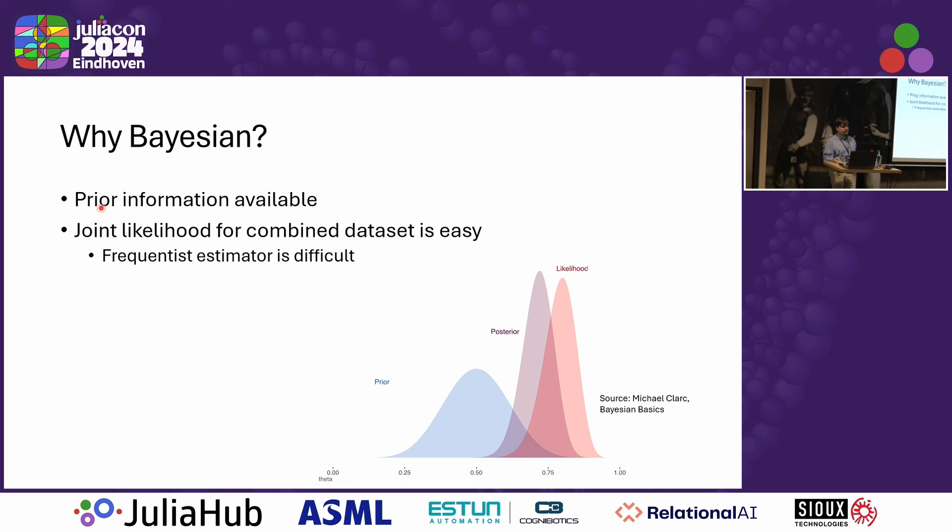For Bayesian inference, you always need two ingredients. The first ingredient is prior information. We had bounds available for all of the parameters of interest. So that can serve as a prior.